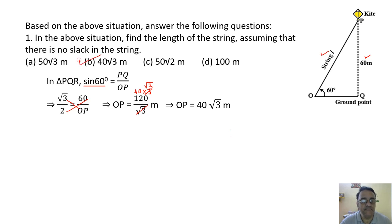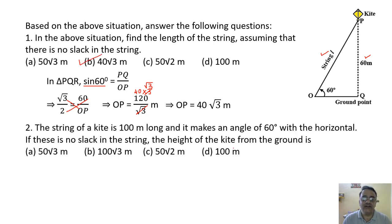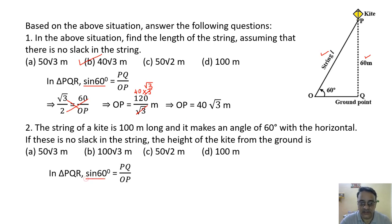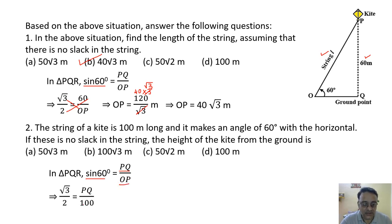Question 2: The string is 100 meter long and makes 60 degrees with horizontal. Find height PQ. Hypotenuse is given; using sin 60° = PQ/OP: √3/2 = PQ/100. Cross multiplying gives PQ = 50√3. The correct option is option A.